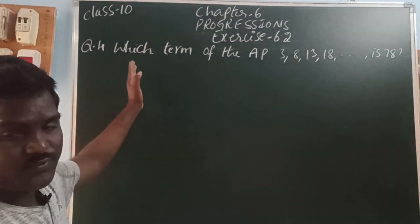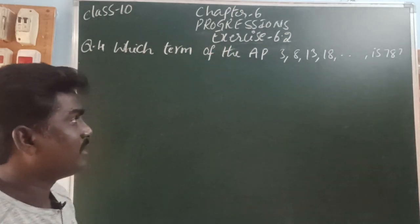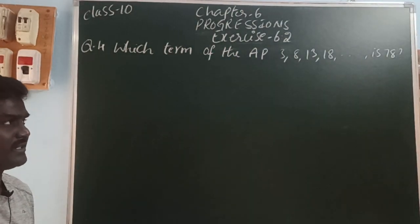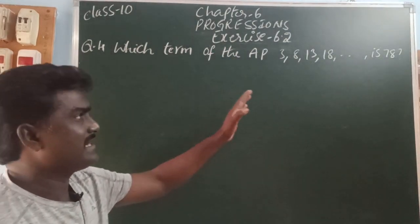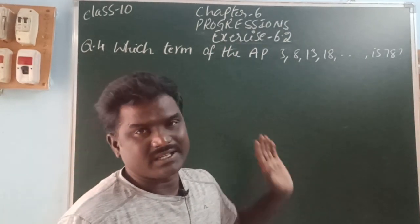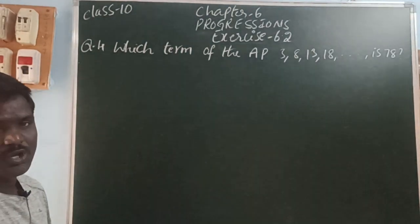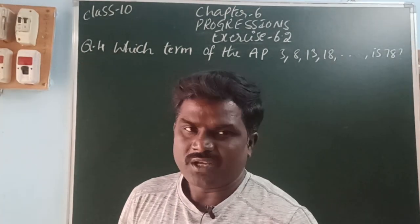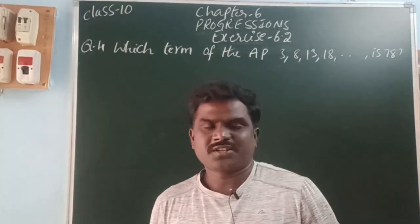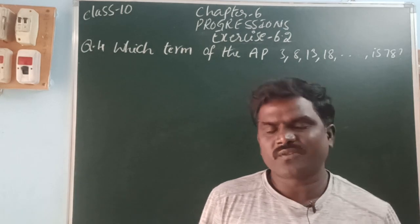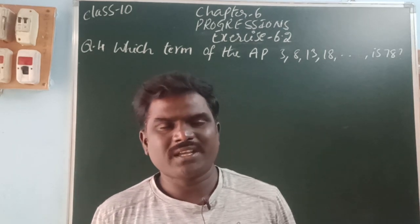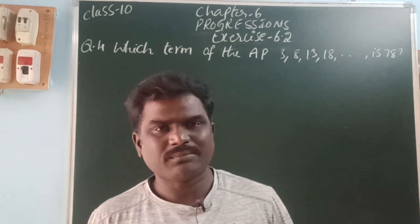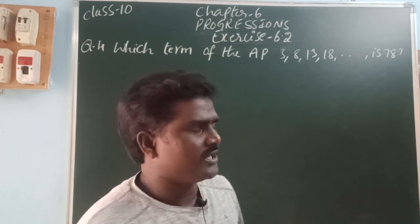Here, which term of the AP 3, 8, 13, 18 and so on is 78? So, which term — how many terms, last term — we can use the formula for the nth term. What is the nth term of AP? A plus n minus 1 into D.